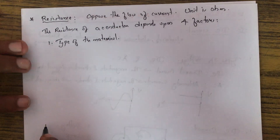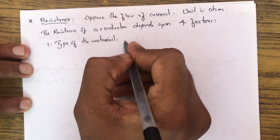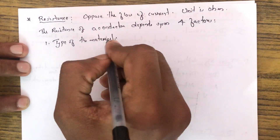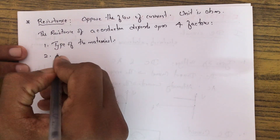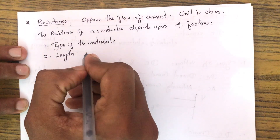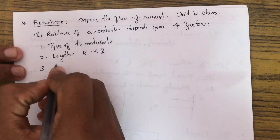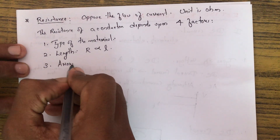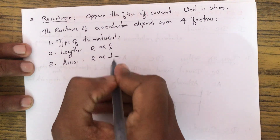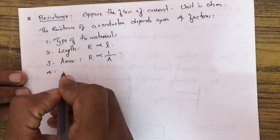The first factor is the type of material — for example, silver is a better conductor than copper. The second factor is the length of the conductor: resistance is directly proportional to length. The third factor is the cross-sectional area: resistance is inversely proportional to area. The fourth factor is temperature.